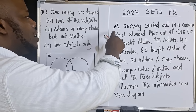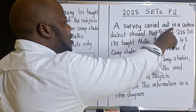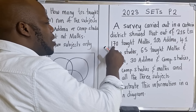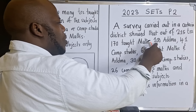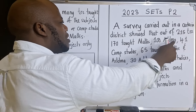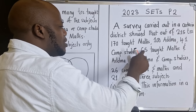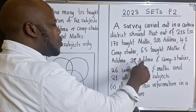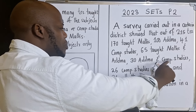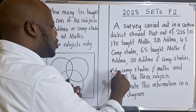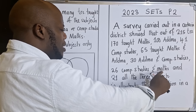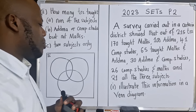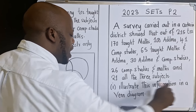The question reads: a survey carried out in a certain district showed that out of 215 teachers, 170 taught Mathematics, 100 taught Additional Mathematics, 41 taught Computer Studies, 65 taught Mathematics and Additional Mathematics, 30 taught Additional Mathematics and Computer Studies, 26 taught Computer Studies and Mathematics, and 21 taught all three subjects. Illustrate this information in a Venn diagram.